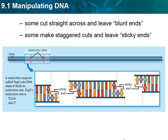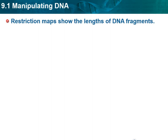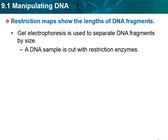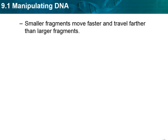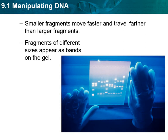That right here is showing you the sticky ends. Restriction maps show the length of DNA fragments, and we use gel electrophoresis to separate DNA fragments by size. Gel electrophoresis is like a jello-type substance placed in a tank of water with electricity run through it. DNA fragments are placed into the gel, and the electrical current pulls them through — the smaller they are, the farther they move. Smaller fragments move faster and travel farther than large fragments, and fragments of different sizes appear as bands in the gel.